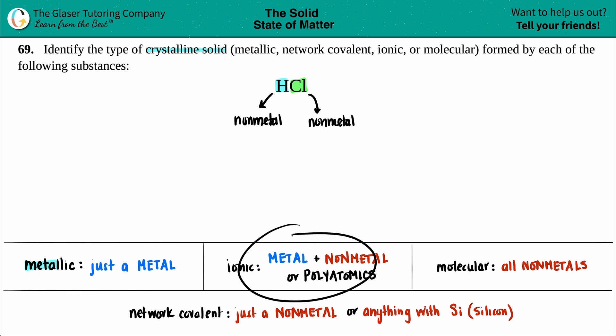Is it an ionic crystalline solid? Well, ionic comes from ionic compound. Remember, an ionic compound is a metal plus a non-metal, or if you start seeing polyatomic ions. But here, I have no metal, and I don't see a polyatomic ion with H and Cl. So it can't possibly be ionic.